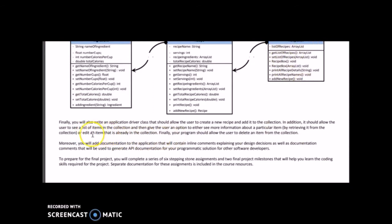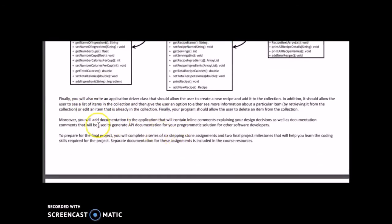For editing an item, you can go into as much detail as you want. At the minimum, you should be able to select a recipe from the list and change its properties — either its name, servings, or ingredients, thereby changing the total recipe calories. How you do this is up to you, but you should be able to modify recipe properties. Make sure you generate your JavaDoc documentation and submit the JavaDoc folder in your final submission.